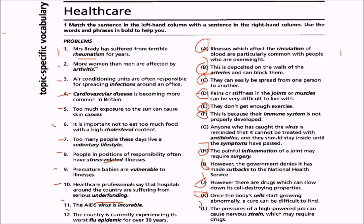Twelfth: the country is currently experiencing its worst flu epidemic for over 30 years. This will match with G — anyone who has caught the virus is reminded that it cannot be treated with antibiotics and they should stay inside until the symptoms have passed.